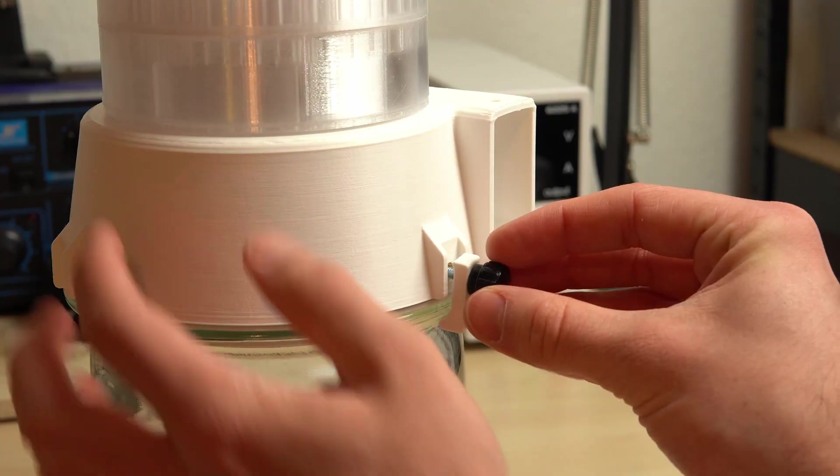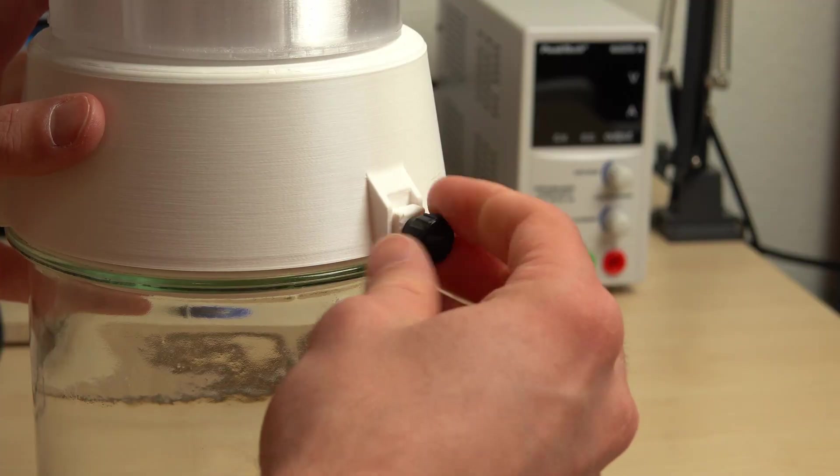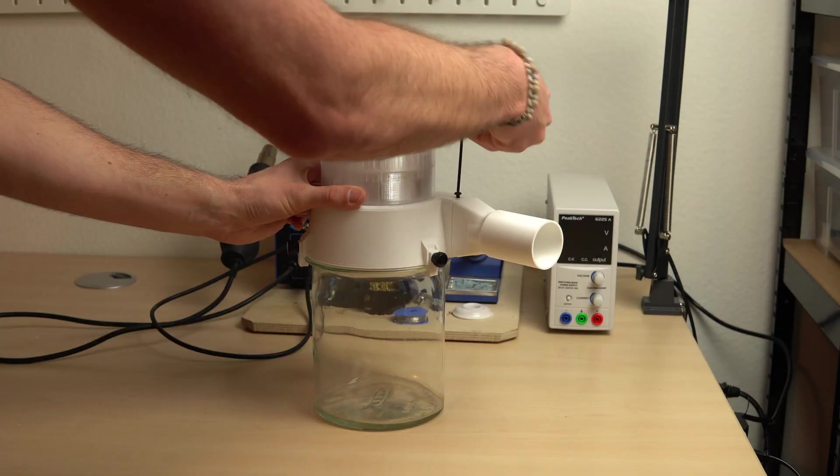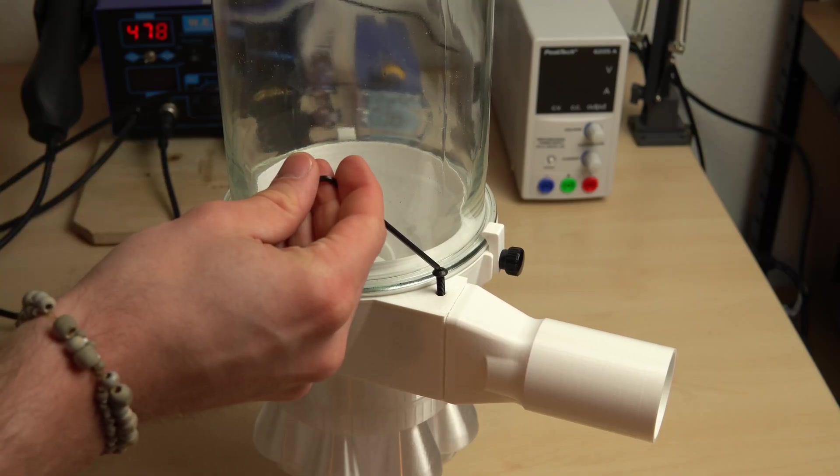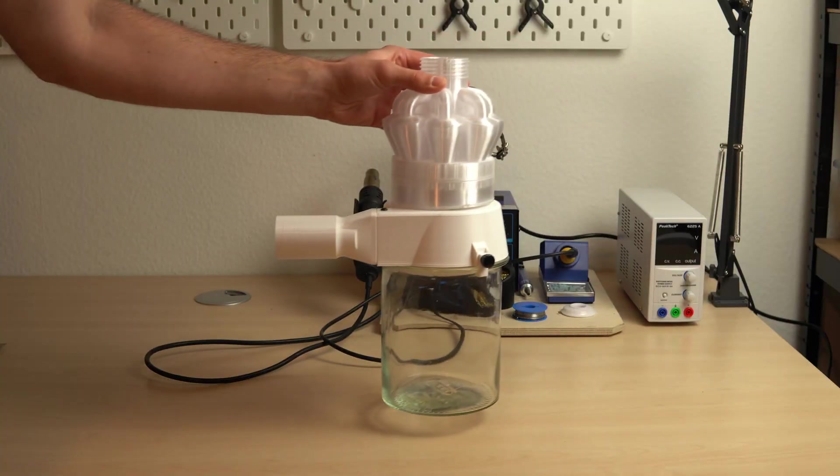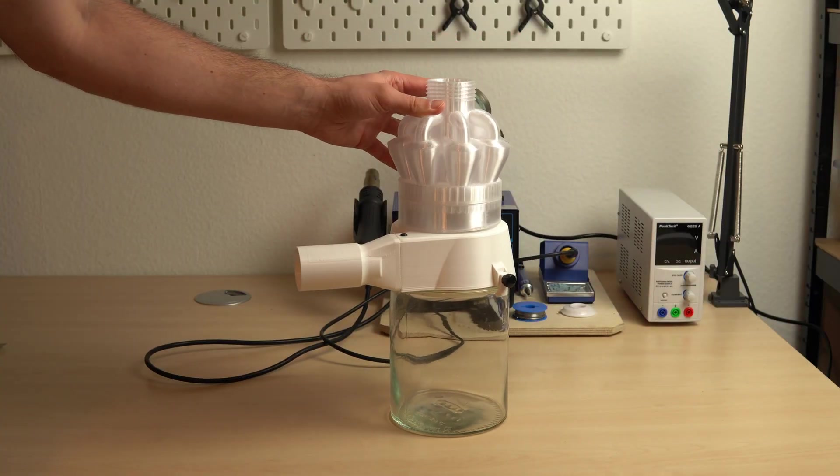Now only connecting the hooks with three knurled M4 screws and the tubing adapter. And that would be it. Actually I forgot to install the dip tube here in the clip, so that has to be done in advance and then the build is finished.